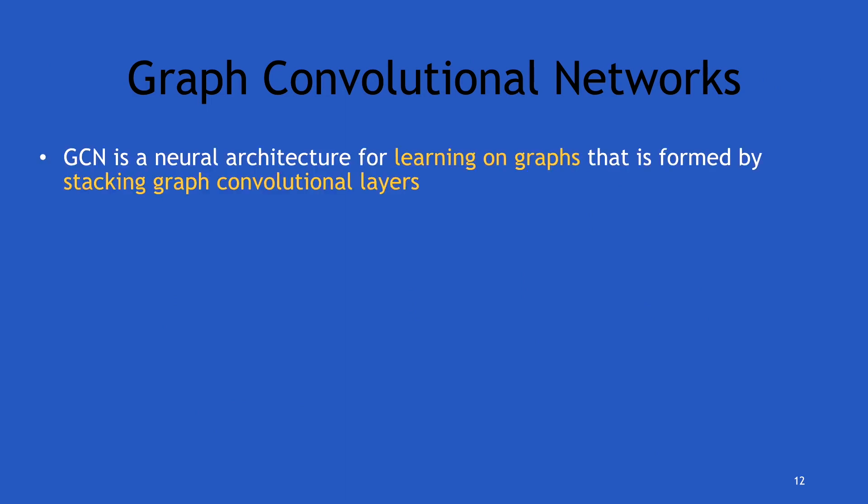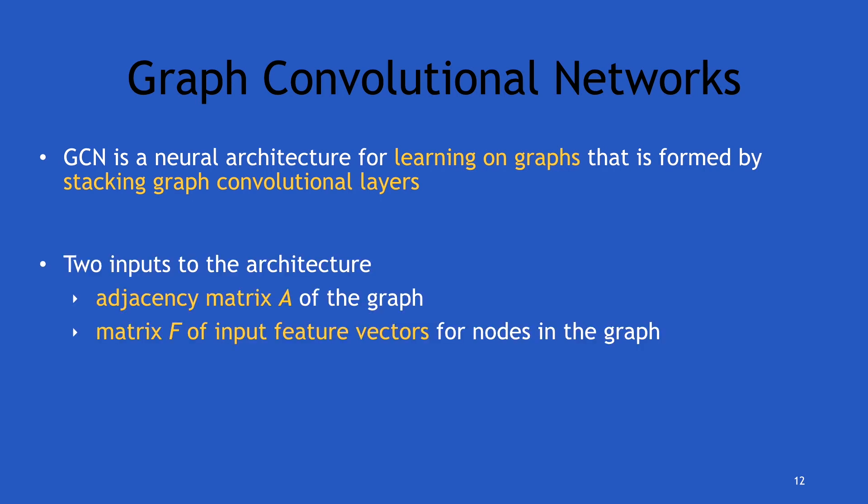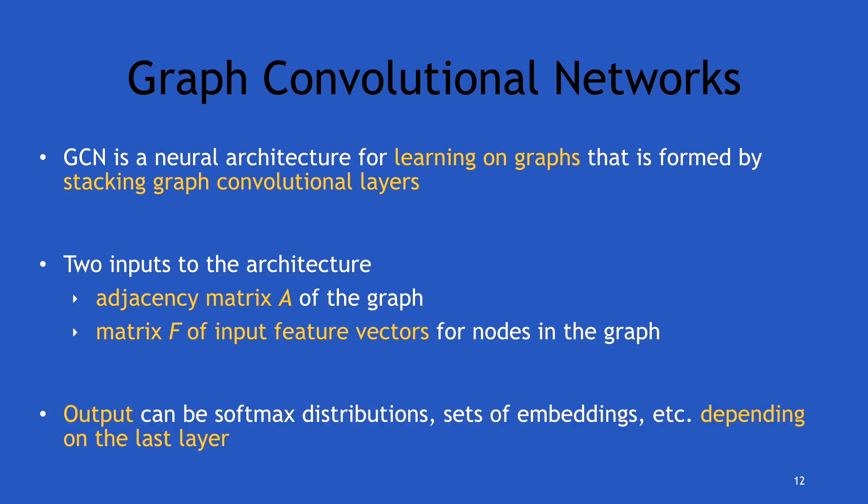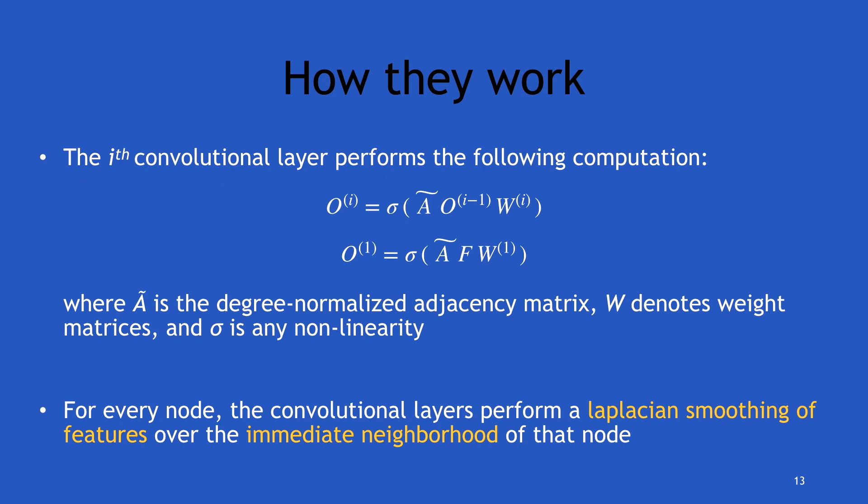Graph convolutional networks are neural architectures for learning on graphs — basically just stacks of graph convolutional layers. The input to this architecture is the adjacency matrix of the graph and a matrix containing initial feature vectors for each node. The output can be anything from softmax distributions to embeddings, depending on the last layer. Each layer performs a standard neural network propagation as defined by recursive equations, and in essence performs a Laplacian smoothing of features over the nodes' neighborhood — distributing those features over the neighborhood.